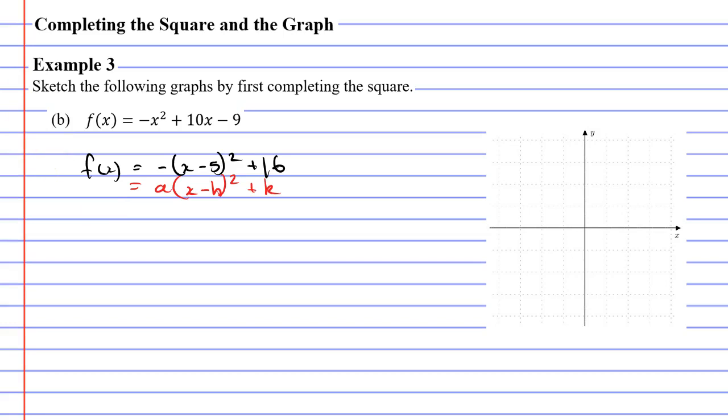This is now in the form a(x - h)² + k. So from this, we can see that a is negative 1. We don't really need to know what a is. We can see that h is 5, and k is equal to 16, meaning that our vertex is the point 5 comma 16. Our vertex is taken from our h and k values. There are several other things we need to find, but we know that the vertex is the point 5 comma 16.